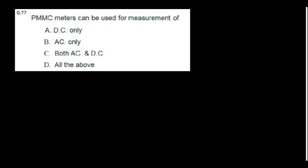PMMC meters can be used for measurement of DC only. Permanent magnet moving coil instruments are used only for the measurement of DC.